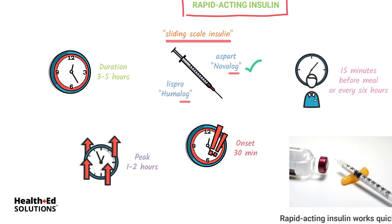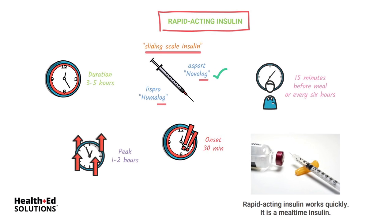These are generalizations to help you remember. Just remember that your rapid acting insulins are Lispro, Novolog, and Aspart. The peak is probably the most important factor you need to remember — that's what you'll be tested over. They'll ask things like when you'd want to make sure the patient has their food after administering this type of insulin, and you obviously want to make sure they have their food before the insulin is at its peak.